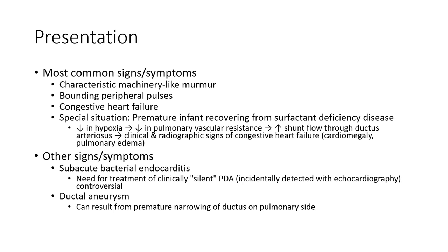Common signs and symptoms: characteristic machinery-like murmur, bounding peripheral pulse, congestive heart failure. Special situation: in premature infants recovering from respiratory distress syndrome, murmur may be decreased. Equal shunting leading to decrease in pulmonary vascular resistance and increase, leading to increased flow through the ductus arteriosus, leading to clinical and radiographic findings. Other signs include subacute bacterial endocarditis.